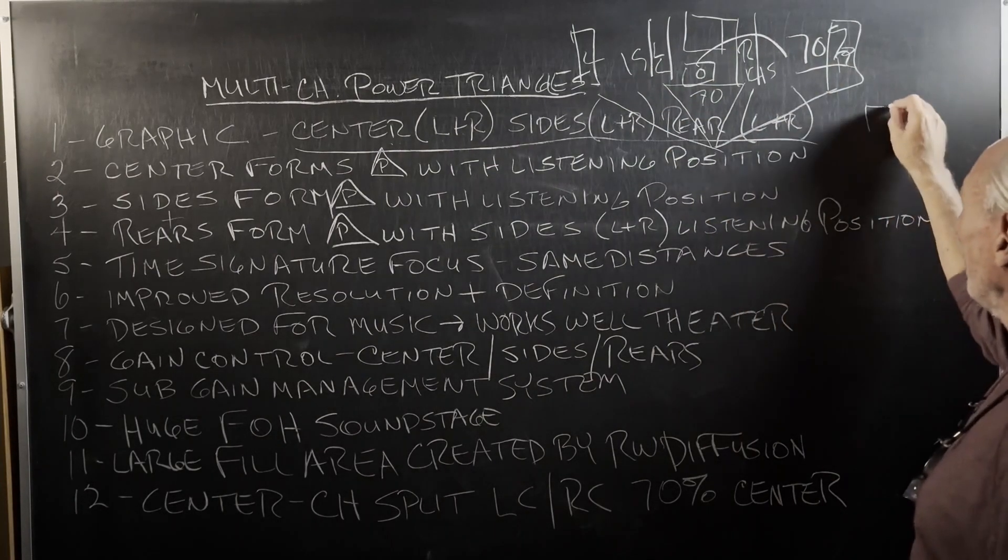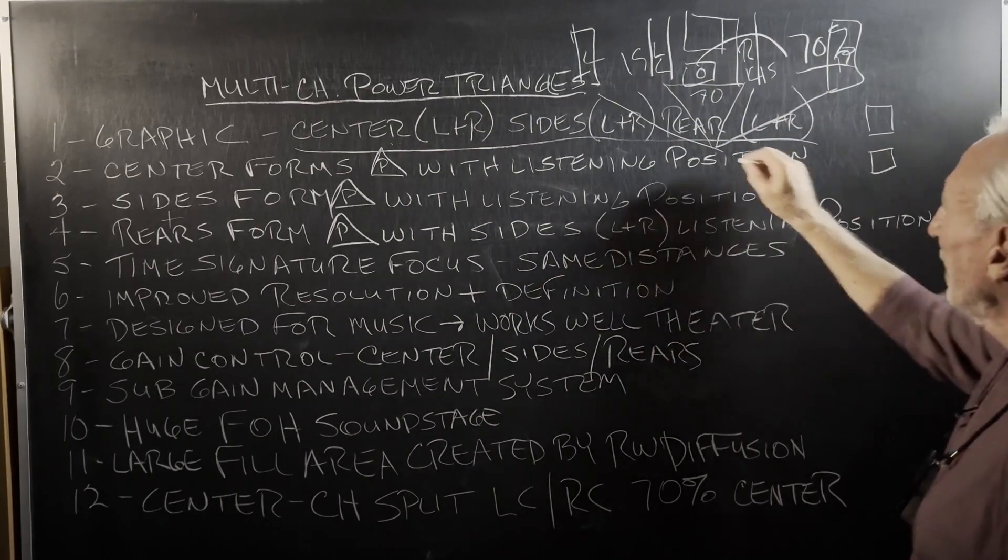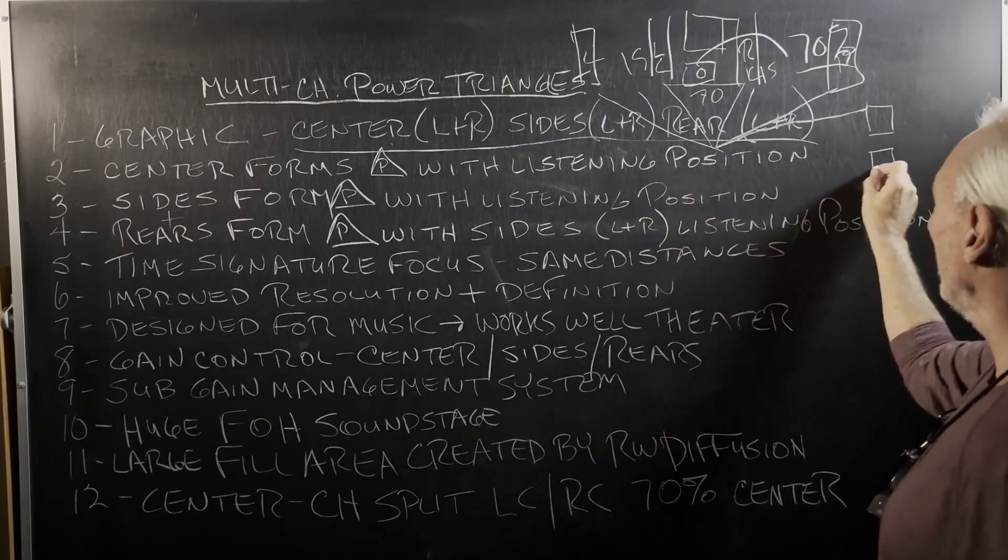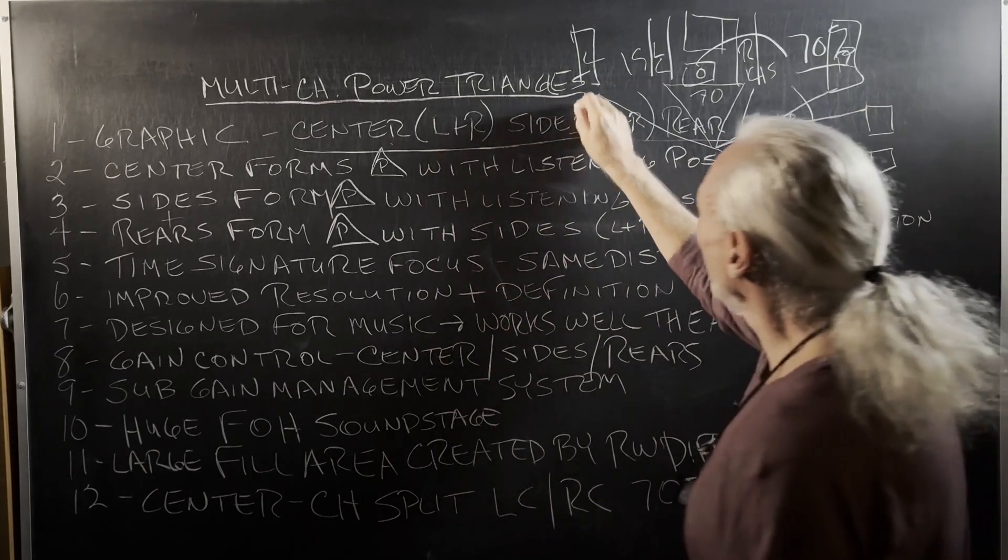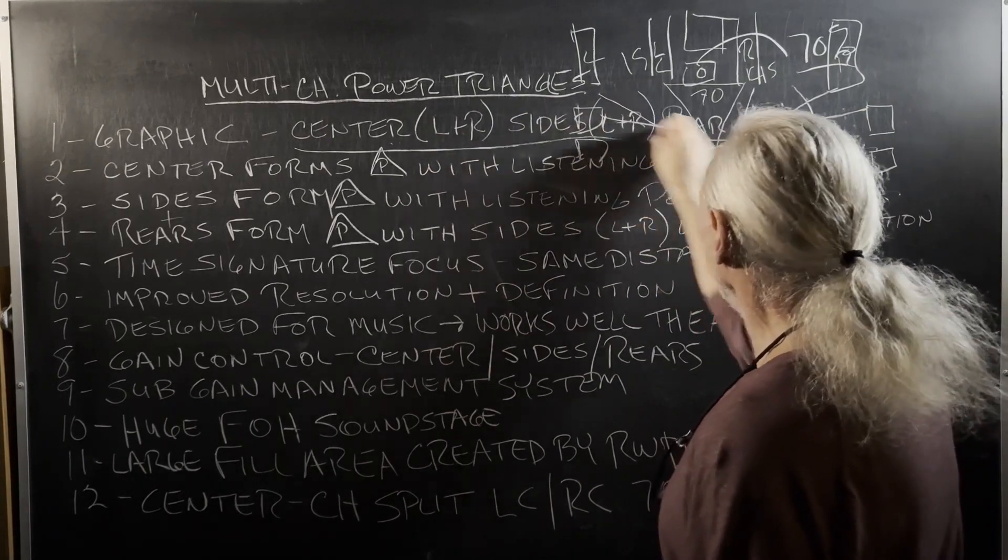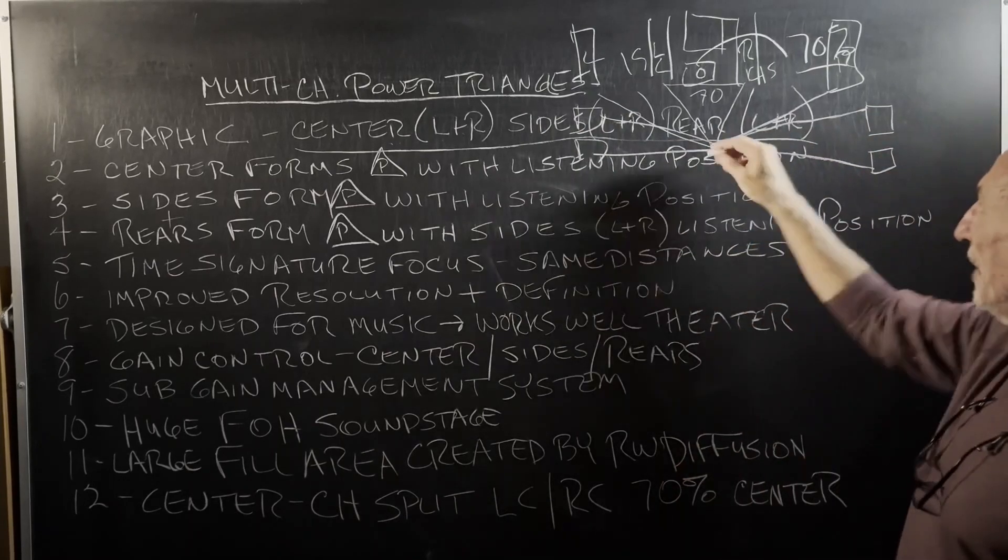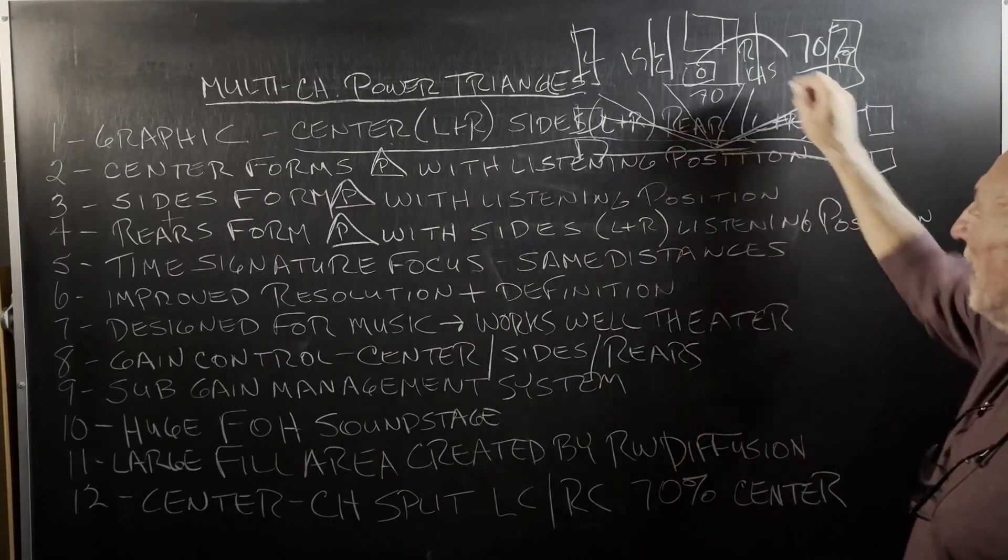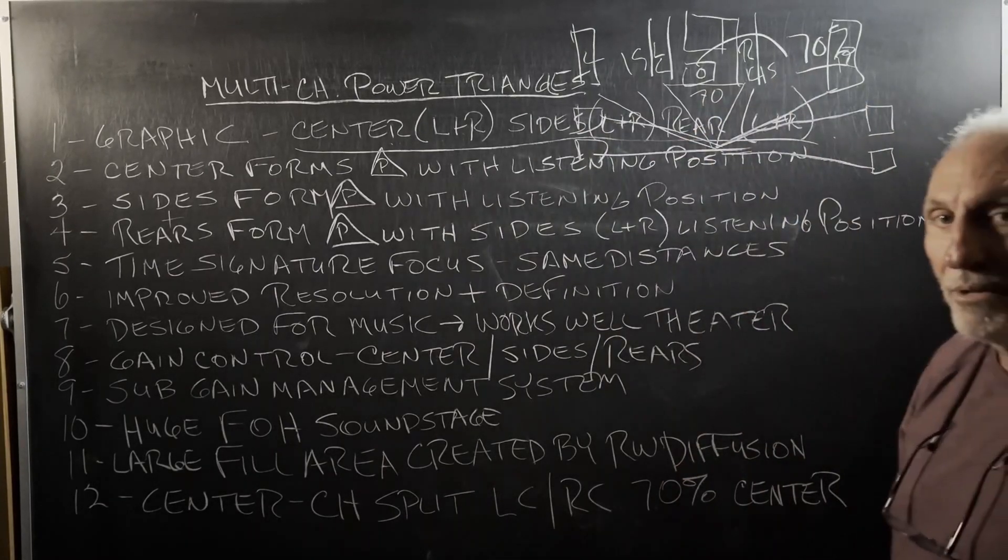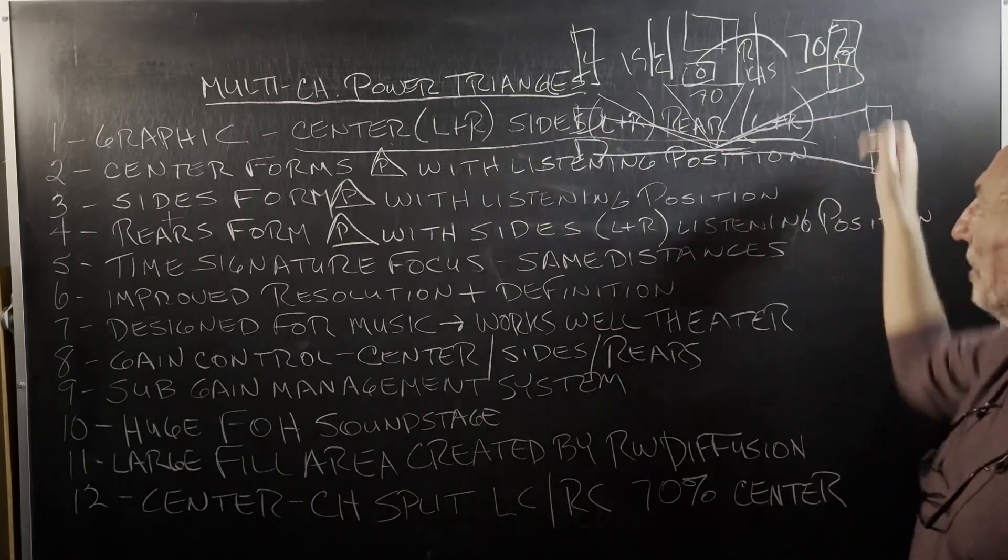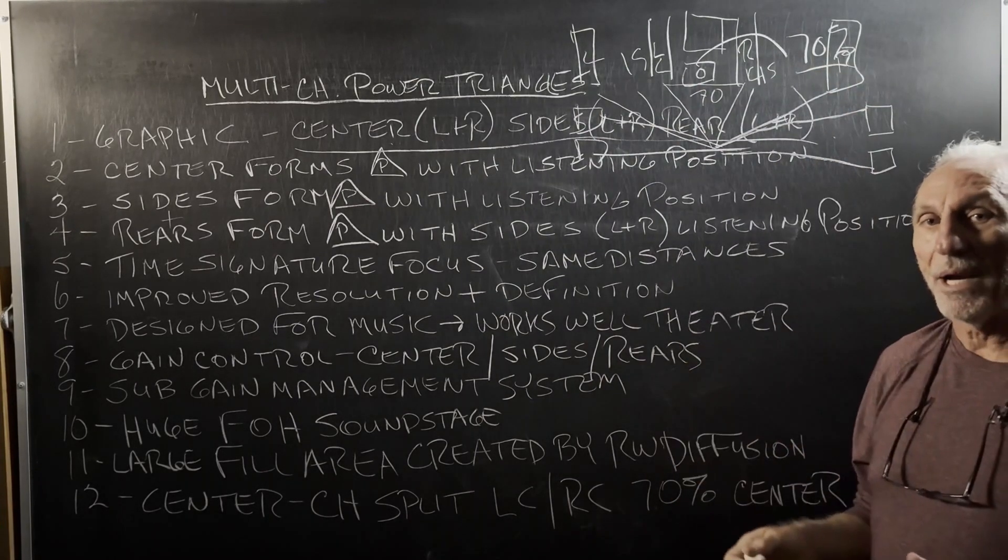The same thing can be done for the sides and the rear, right? They can be the apex. So you have all of these feeding in that are all triangles, four different triangles in there. And the distance is critical. So you got to get the distance right.